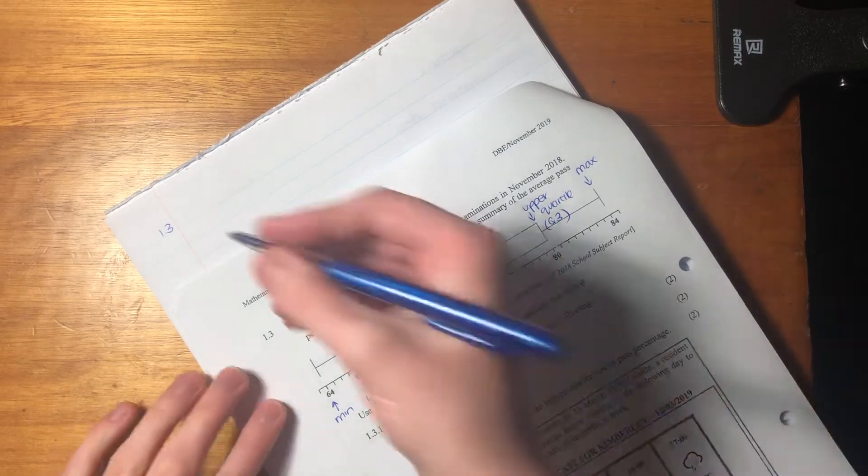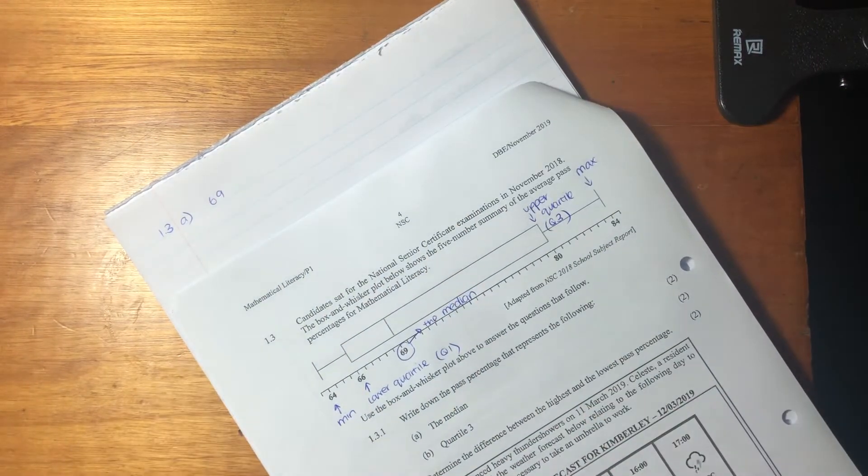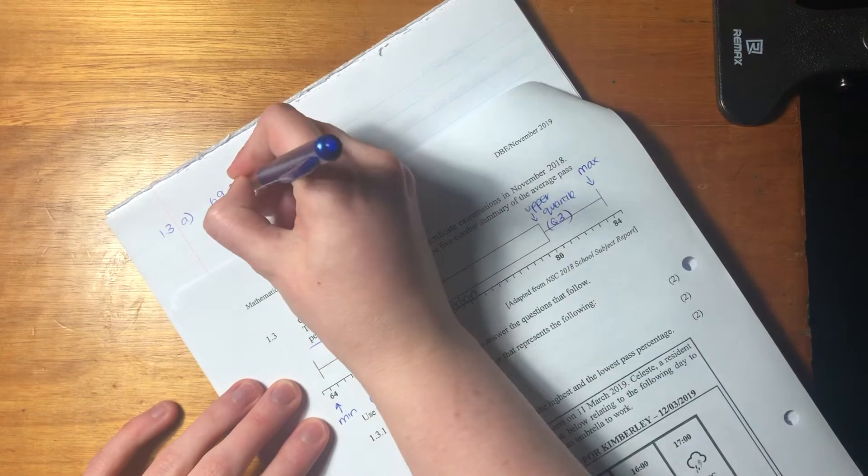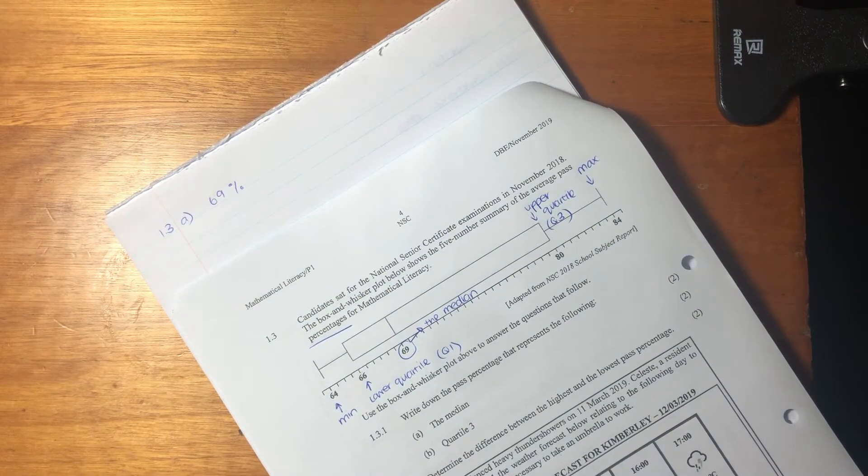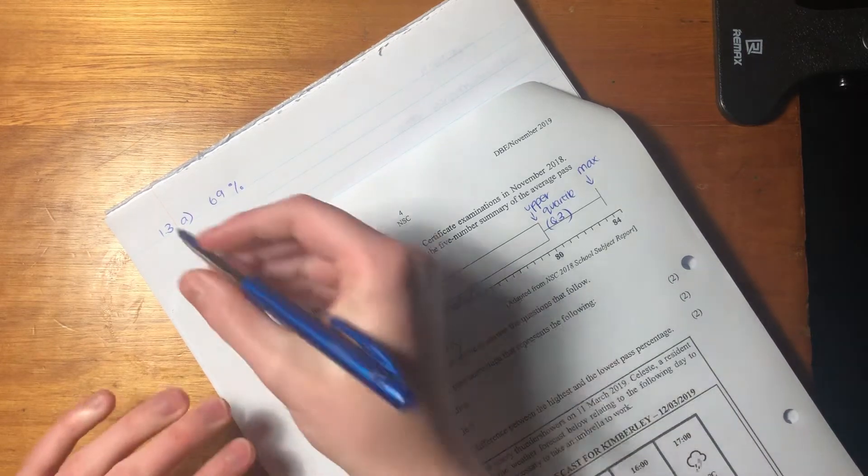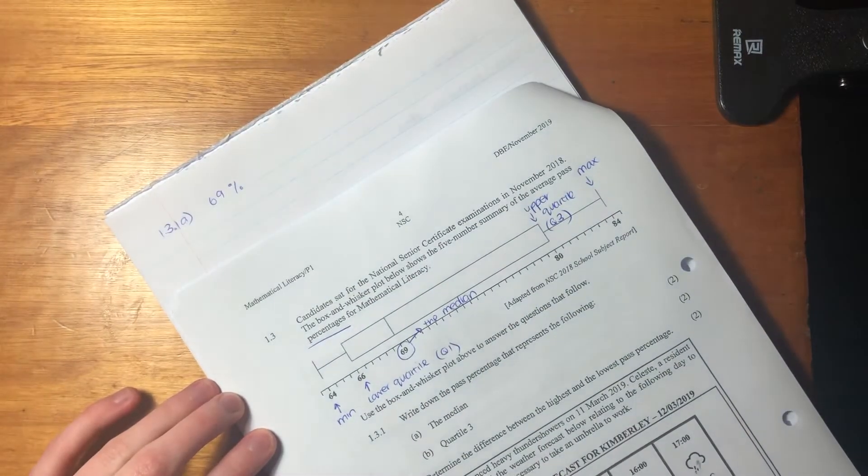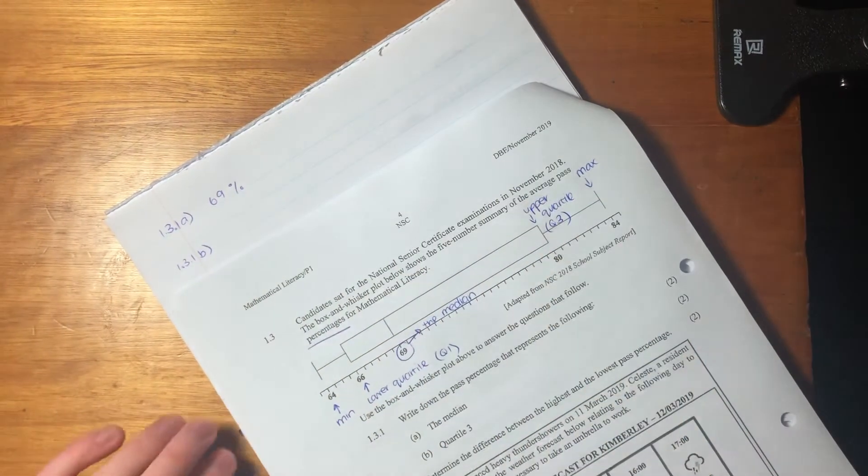It says the median. Easy peasy, right? We say 69. But 69 what, guys? They've told us, look, percentage. So you have to put a little percent. It can't be 69 bananas. It has to be a percent, right? You have to specify what you're talking about. It's important. It is important to be specific. It is also important to label your questions correctly, which I am not very good at, apparently.